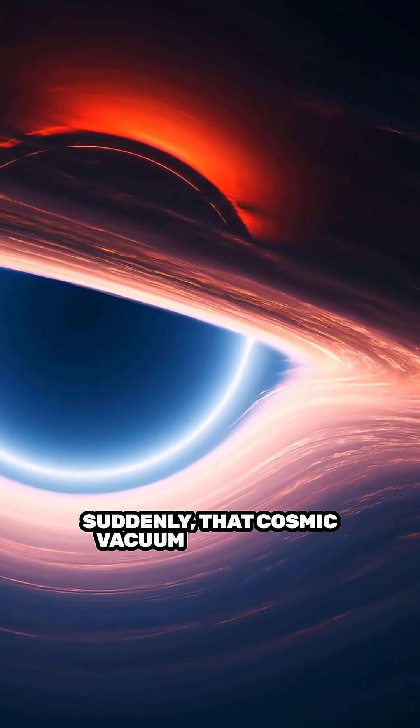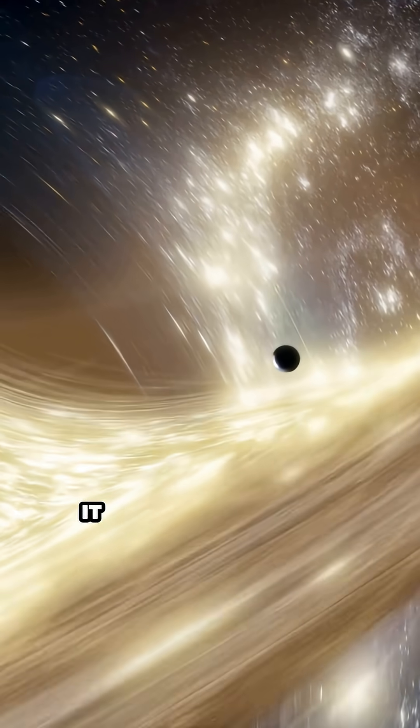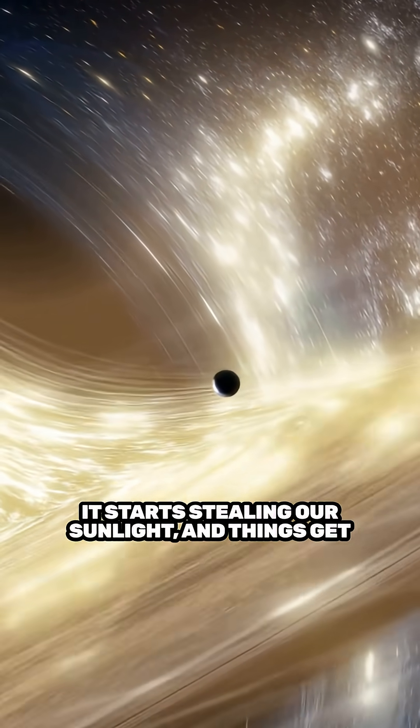Suddenly, that cosmic vacuum is just past Neptune, lurking in our solar system. It starts stealing our sunlight, and things get wild.